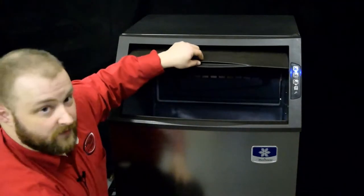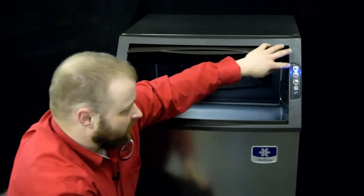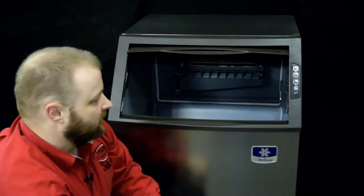The first thing we're going to do is open the door to check if there's any ice on the evaporator currently. If there is, you can simply power down the machine by holding down the power button and then waiting for the ice to fall off the evaporator.